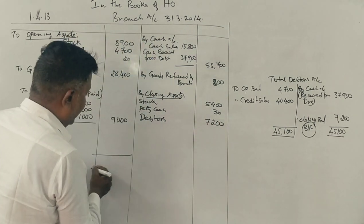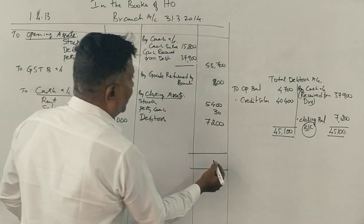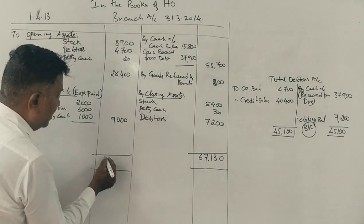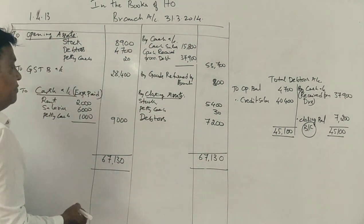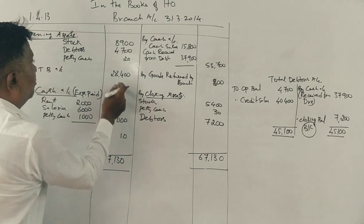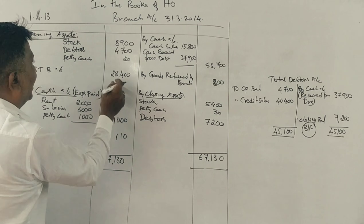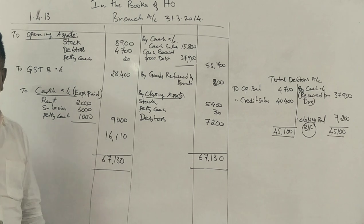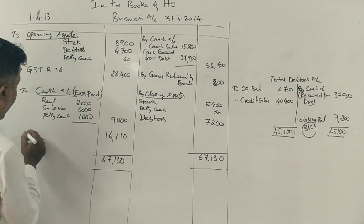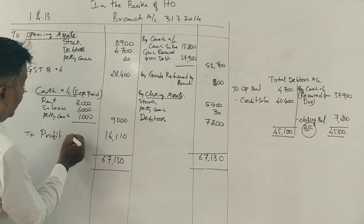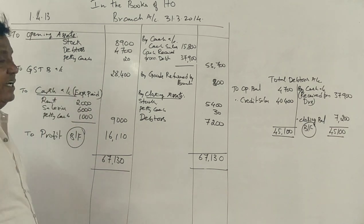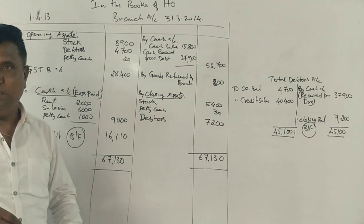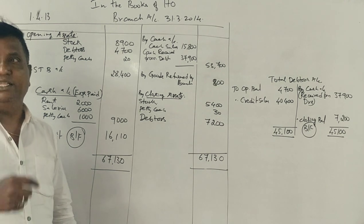Total is 67,130. Correct. Final total is 67,130. Balancing figure gives profit. Now this model question is worth 14 or 15 marks.